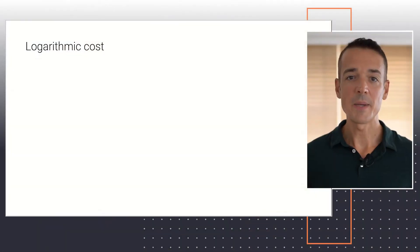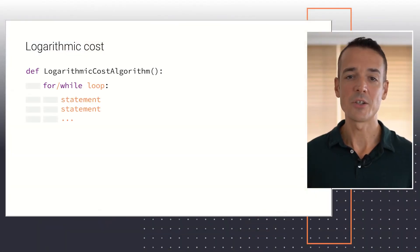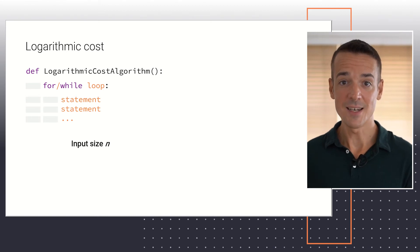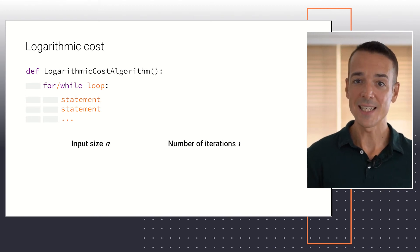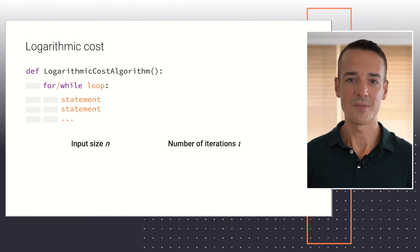The next common category of algorithms, in increasing order of computational cost, is formed of those algorithms operating in a logarithmic cost. The code implementing such algorithms is typically characterized by the presence of a loop running a set of sequential statements. In this loop, the input size n affects the number of iterations t executed in the loop as follows.